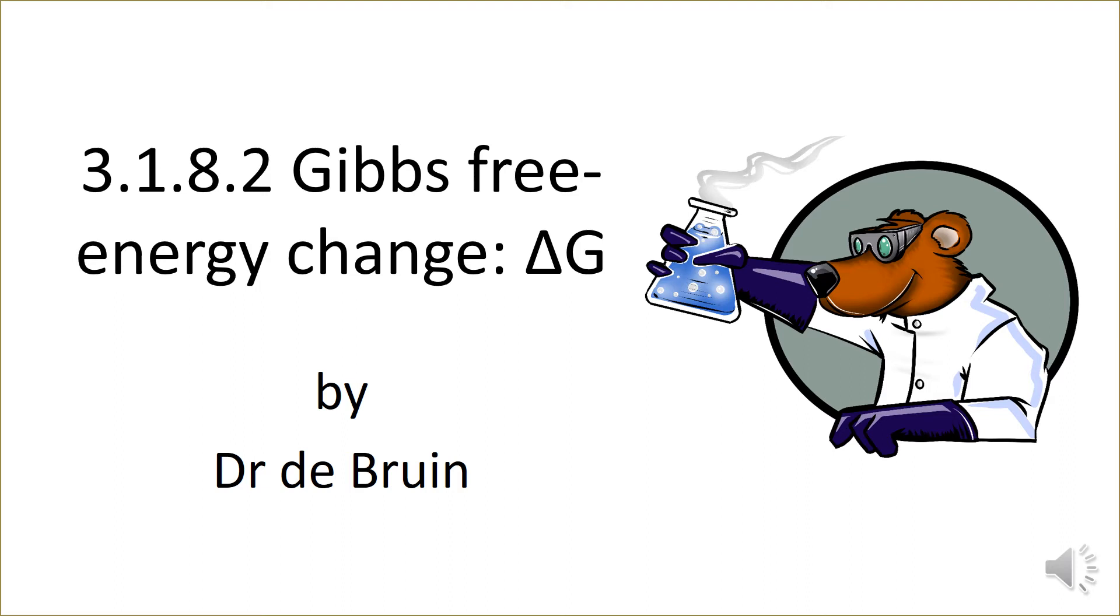This is an A-level chemistry revision video sitting within the thermodynamics topic. In this video we're going to look at changes in entropy and how these can be used to calculate something called Gibbs free energy which allows us to predict whether a chemical reaction will be feasible or not.